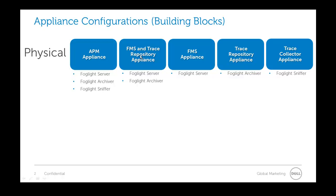If you use the FMS and trace repository appliance, you need to pair it with the sniffer, so you need to make sure you have all three components: the Foglight server, the Foglight archiver, and the Foglight sniffer. Alternatively, in a more production environment, you can have a Foglight server and then a Foglight archiver and a Foglight sniffer on separate physical appliances.